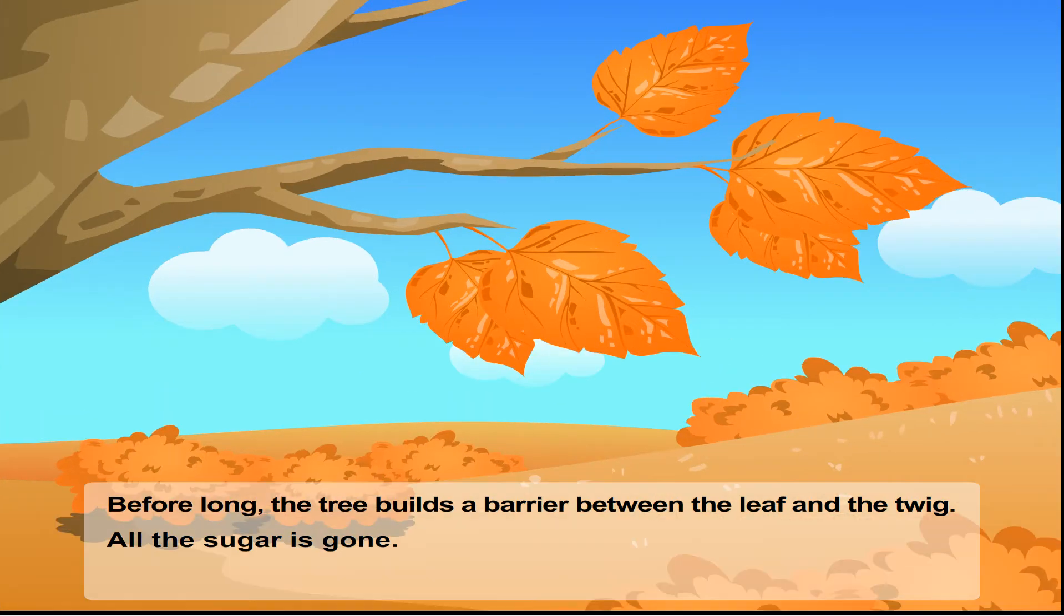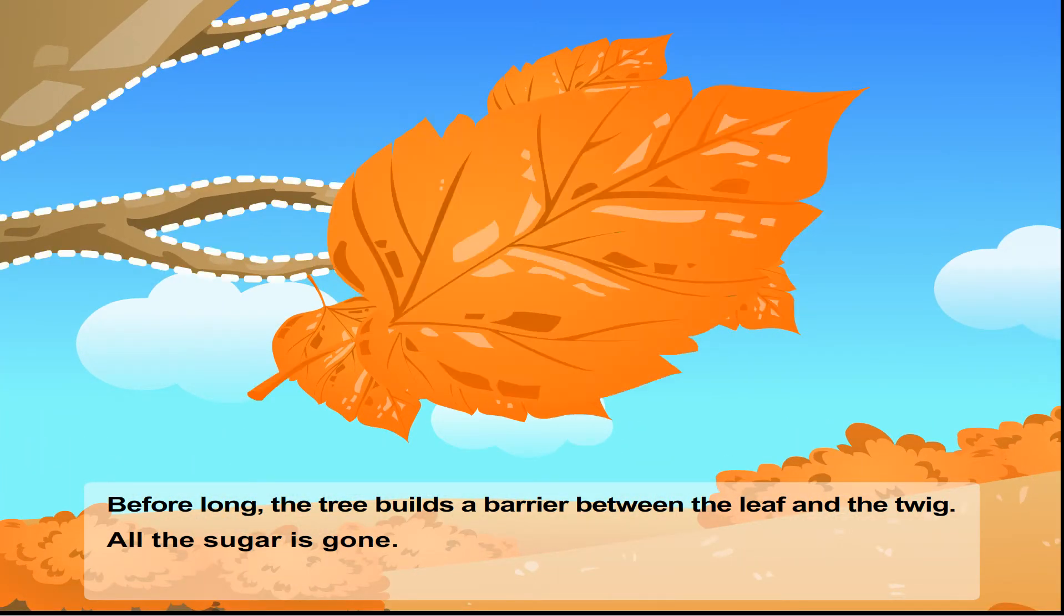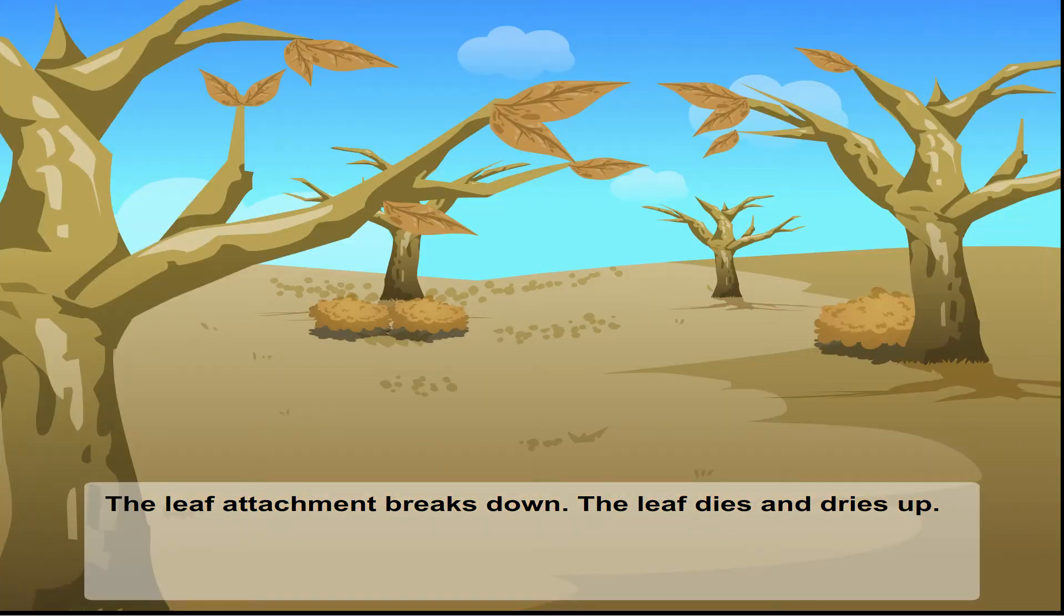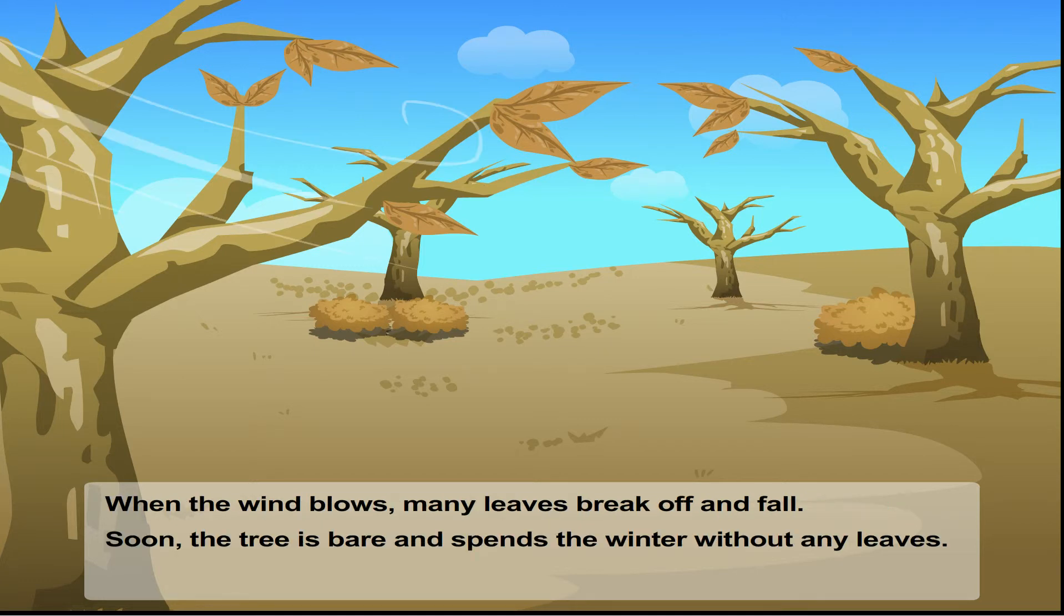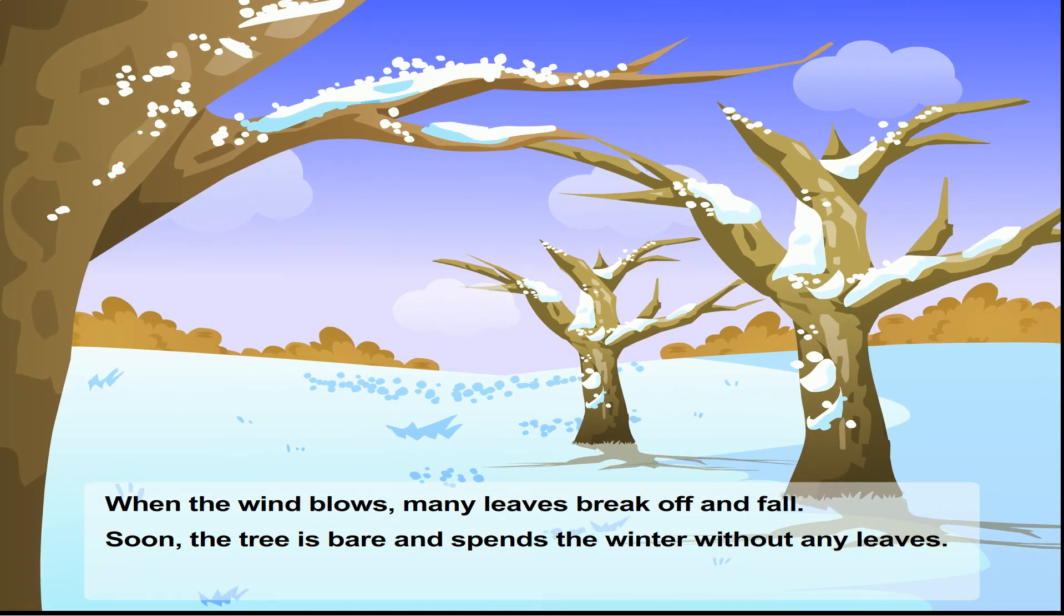Before long, the tree builds a barrier between the leaf and the twig. All the sugar is gone. The leaf attachment breaks down. The leaf dies and dries up. When the wind blows, many leaves break off and fall. Soon the tree is bare and spends the winter without any leaves.